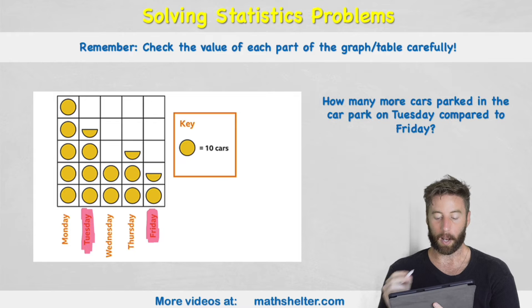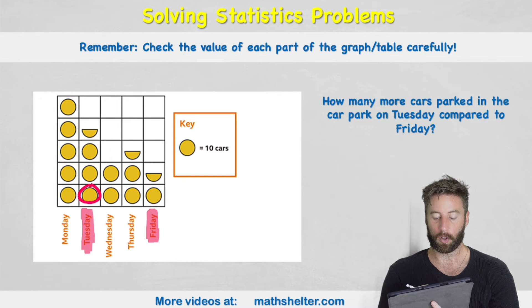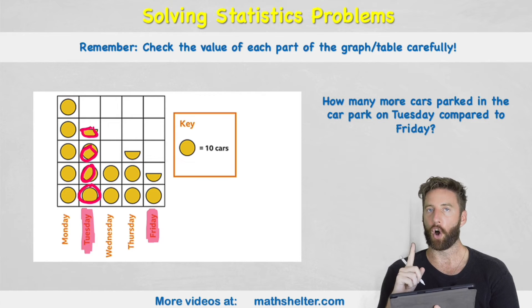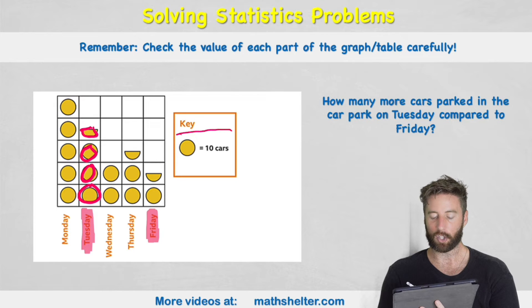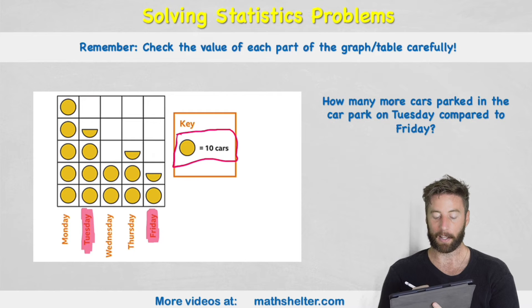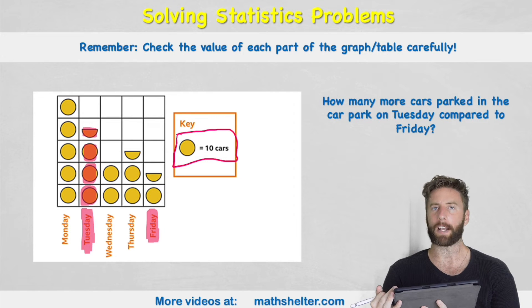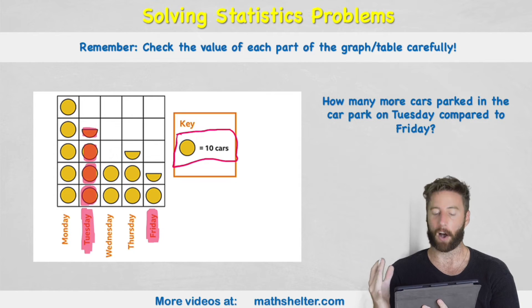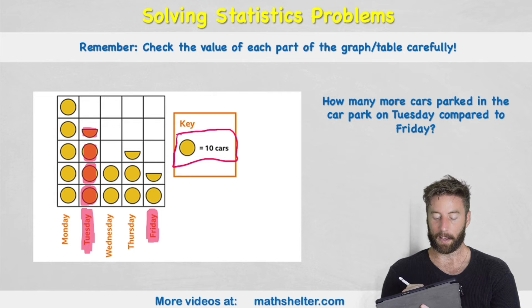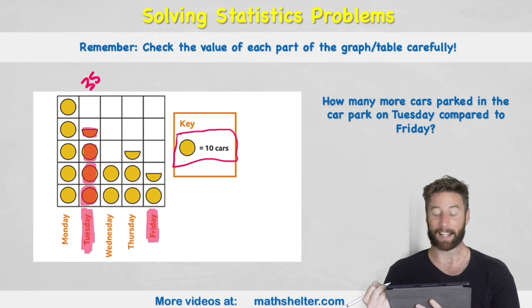So let's look at Tuesday. Well I think we have one, two, three and a half cars. Is that correct? No. Because remember we have this key here to show that each of those circles has a value of 10. So actually what I have is 10 cars plus another 10 which is 20 plus another 10 which is 30 and then plus half a circle. Well what do we think half a circle is? If a full circle is 10, half a circle must be 5. So on Tuesday I had 35 cars parked in the car park.